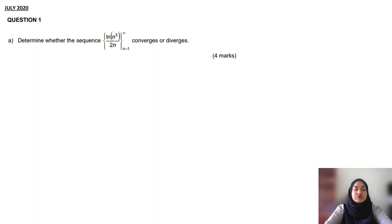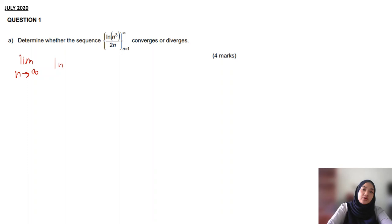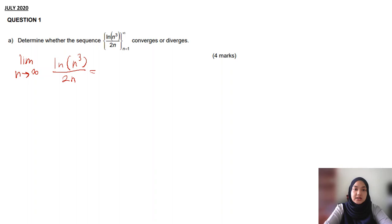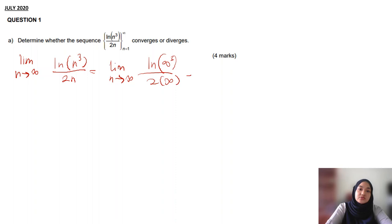This one is from July 2020: determine the sequence. You can see that the sequence has a ln here. The first step is limit n approaching to infinity of ln(n³) over 2n. You have to check the indeterminate form. Substitute: you get ln(infinity)³ over 2·infinity, which gives infinity over infinity. So this is indeterminate form.